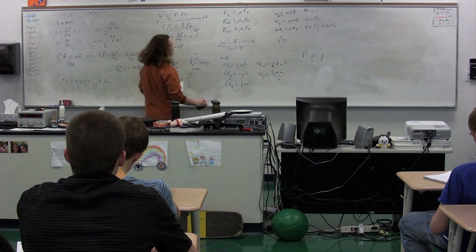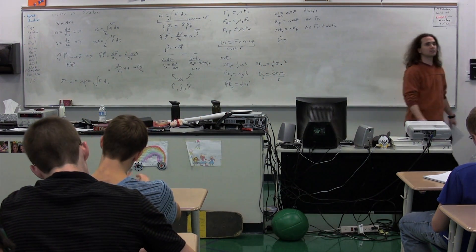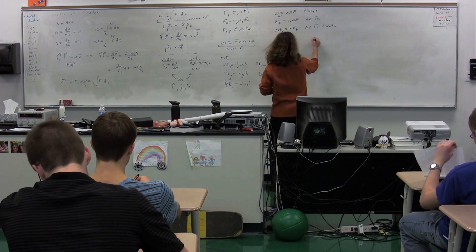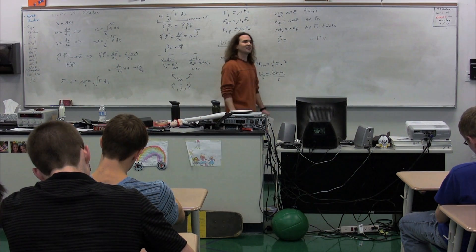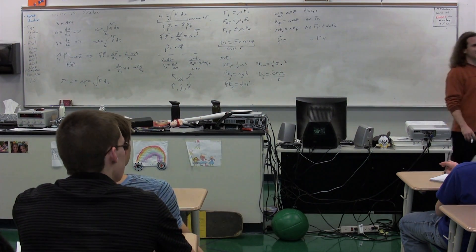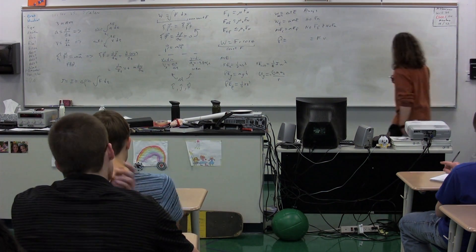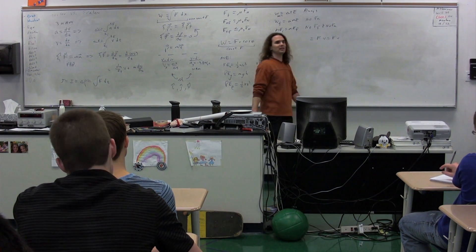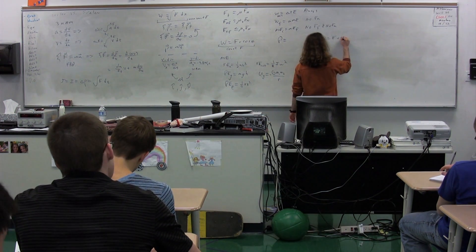We have power. Give me any equation for power. Bailey? Force times velocity. Okay. We'll put that one over here. And it is not quite force times velocity. Factor over force. Nick? Dot product. It's the dot product. It's the dot product of force and velocity. Which means it's FV times what, Catherine? Cosine theta.